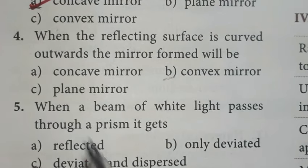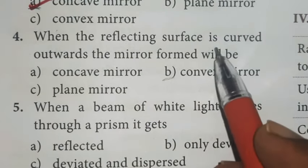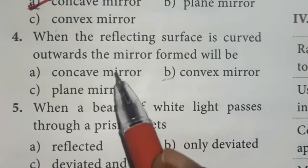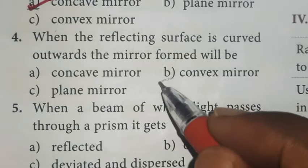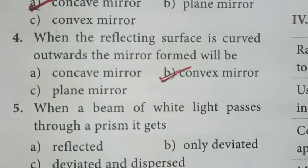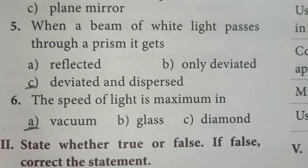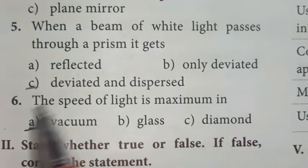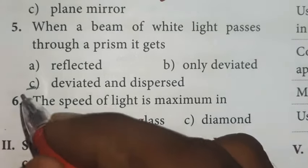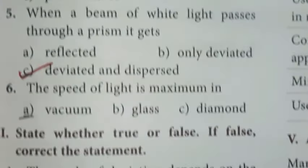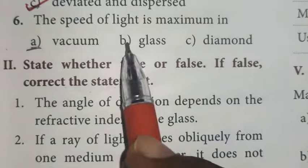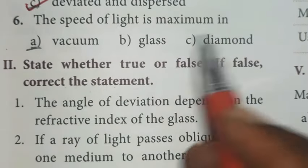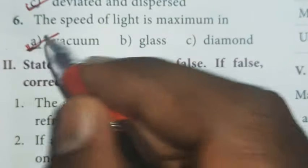Fourth one, when the reflecting surface is curved outwards, the mirror formed will be convex mirror. Option B is the right answer. Fifth one, when a beam of white light passes through a prism, it gets deviated and dispersed. Option C is the right answer. Sixth one, the speed of light is maximum in vacuum. Option A is the right answer.